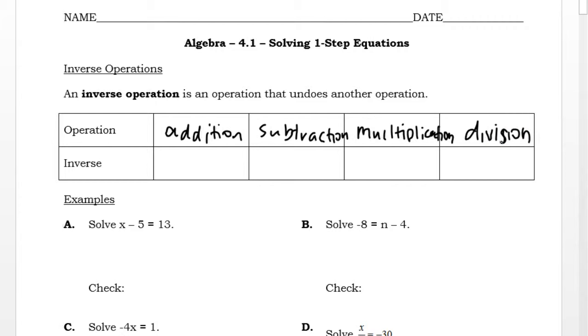And we should know which ones are opposites. So addition, the opposite is subtraction. And the opposite of subtraction is addition. Multiplication is opposites with division. And division is opposites with multiplication.